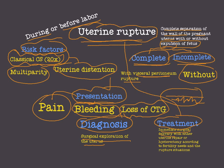Uterine rupture is an important and dangerous situation. The treatment is immediate surgical delivery. After delivery, we may repair the uterus by suturing it if there is an intention to conceive in the future. If there is no intention to conceive, then hysterectomy is the solution.